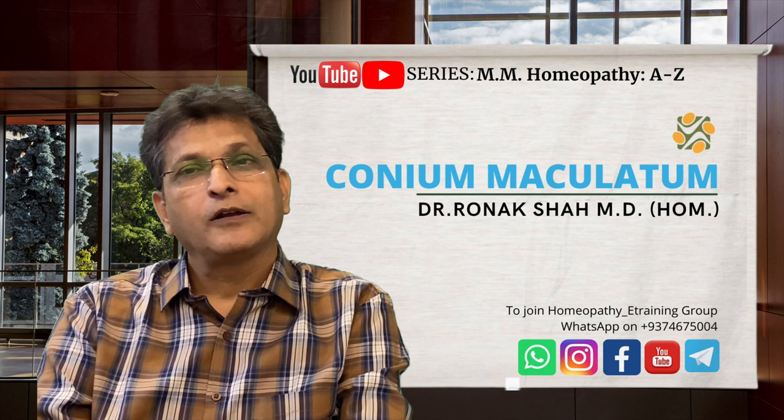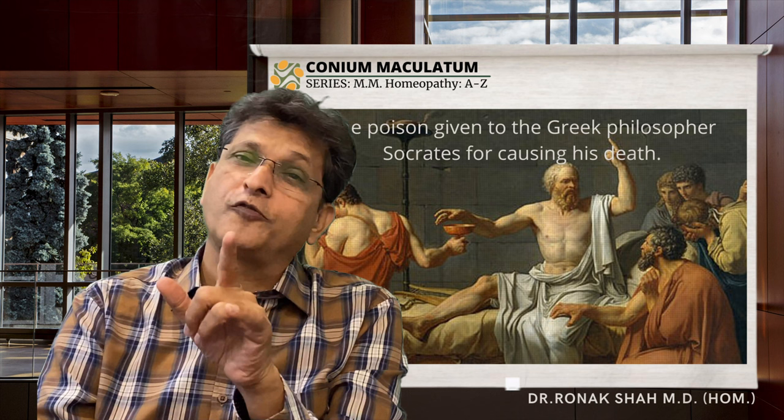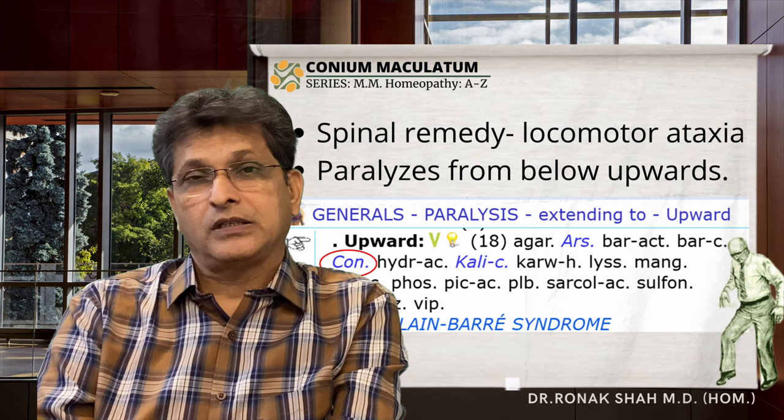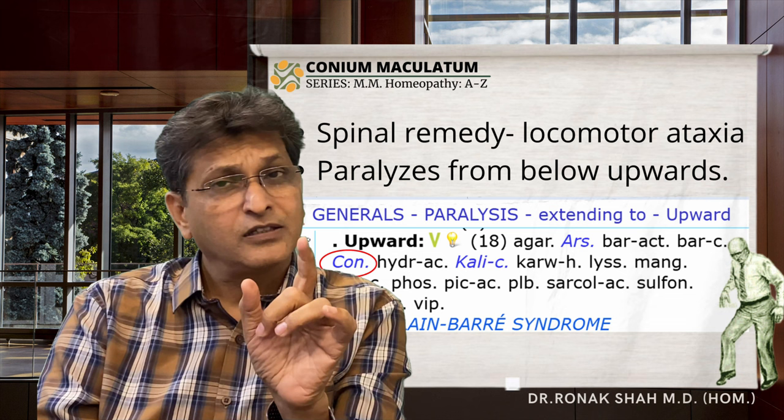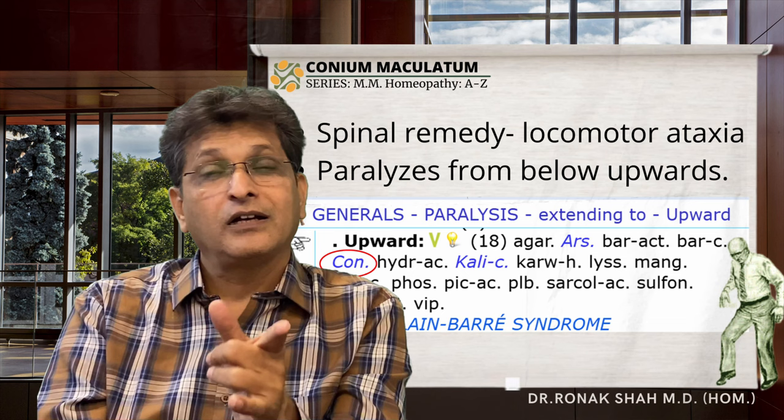Conium — this is the poison which was supposed to have been given to the Greek philosopher Socrates, causing his death. It is one of the spinal remedies; it paralyzes from below upward. It is a remedy for locomotor ataxia, and we have the rubric 'paralysis extending upward.' We also use it in Guillain-Barré syndrome.